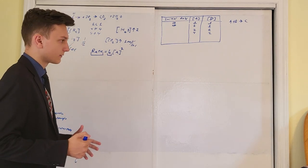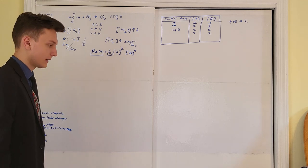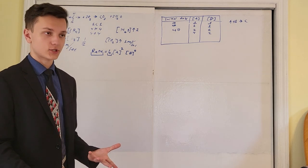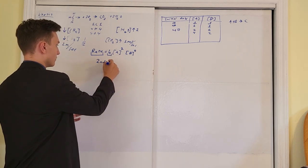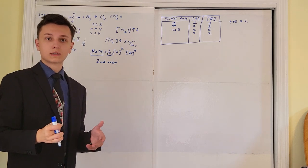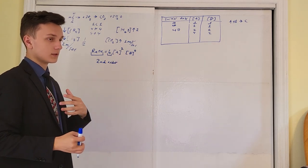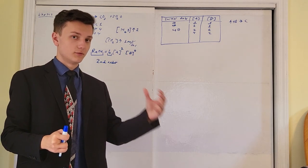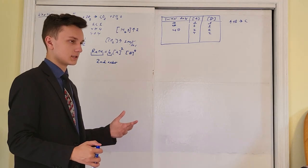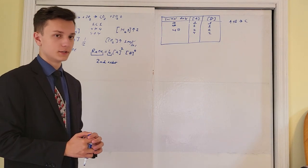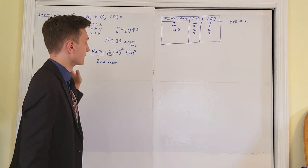Now that you have all your exponents figured out, they'll ask: what is the order of this reaction? Order just means sum up all the exponents in your rate law equation. This reaction would therefore be second order. If asked what order with respect to A, you'd say second order with respect to A. If asked about B, you'd say zeroth order with respect to B, and first order for an exponent of 1. It's a very common FRQ type — just analyze how the concentrations relate to the rate.